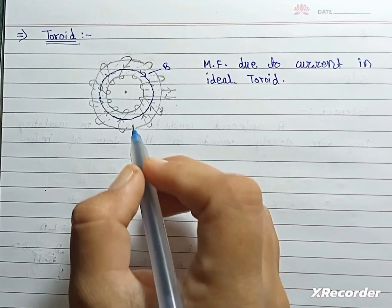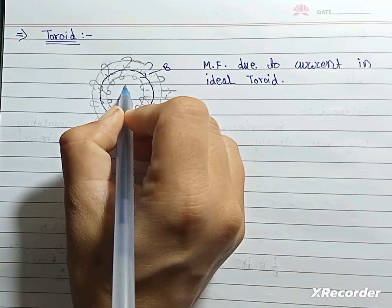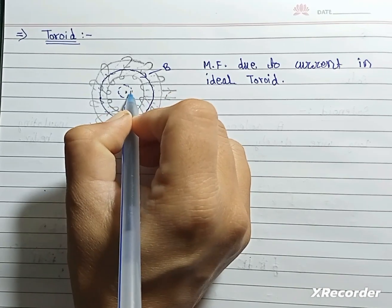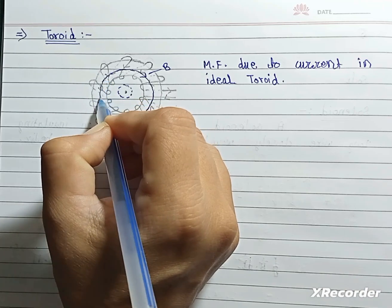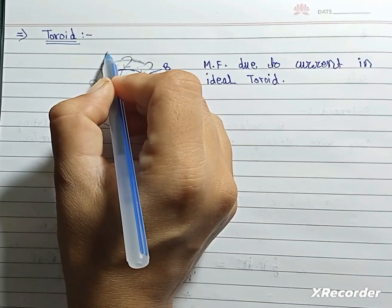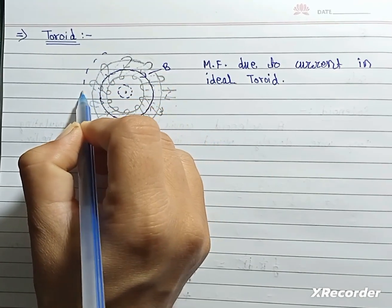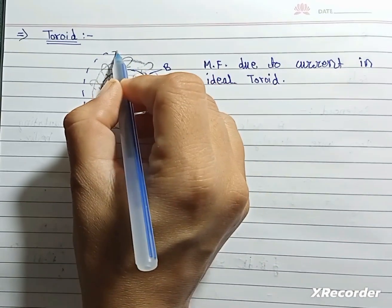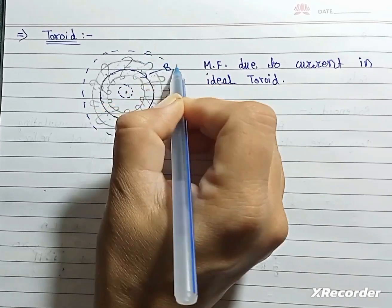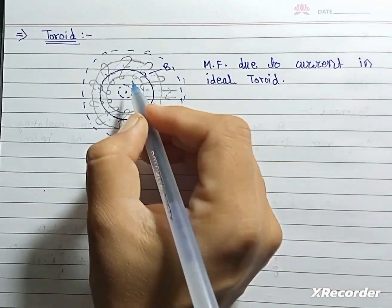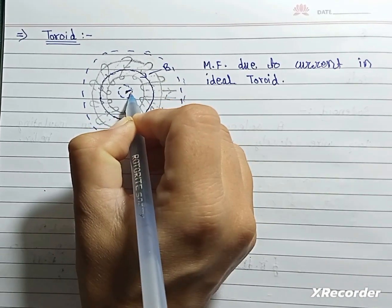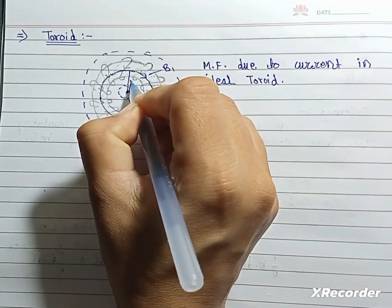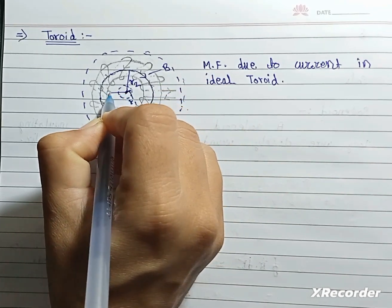Here, first calculate for inside. Consider an Amperian loop - here first Amperian loop, second loop, and third for outside. This is the second loop and third for outside Amperian loop. The radius of first is r1, for second loop radius is r2, and for third loop radius is r3.